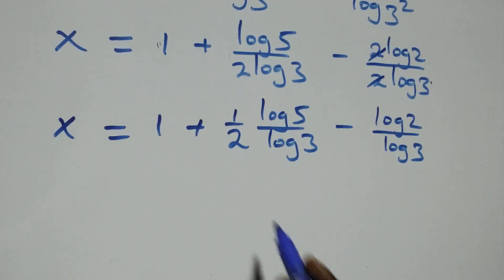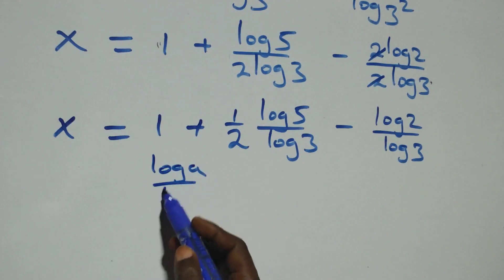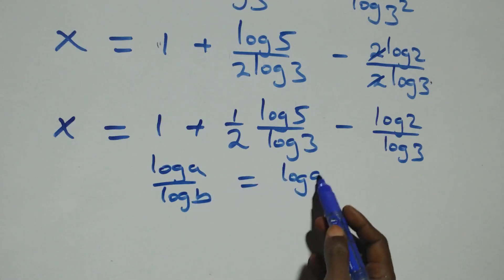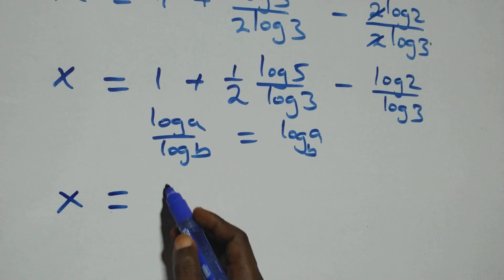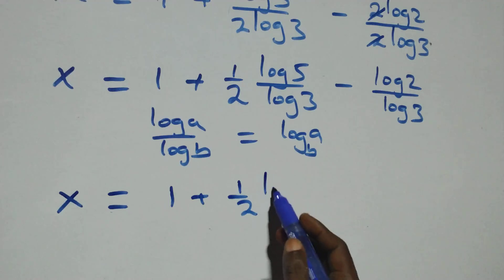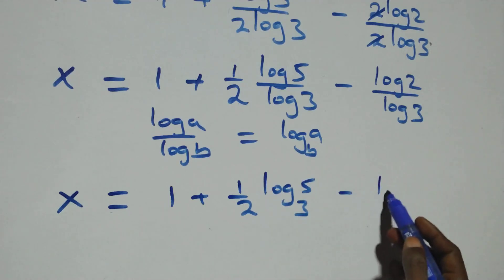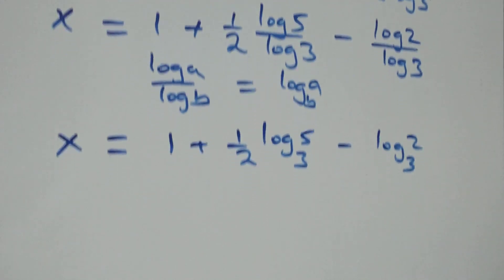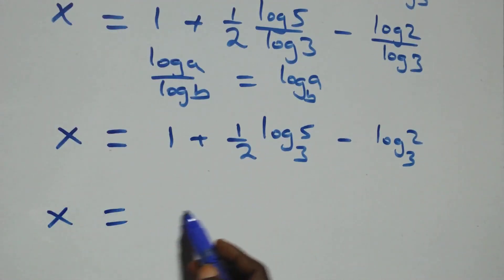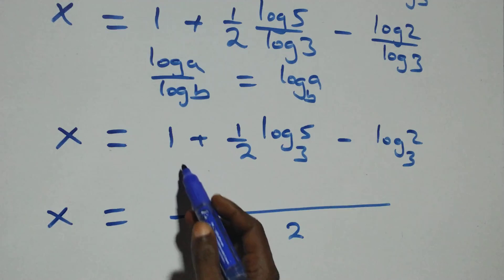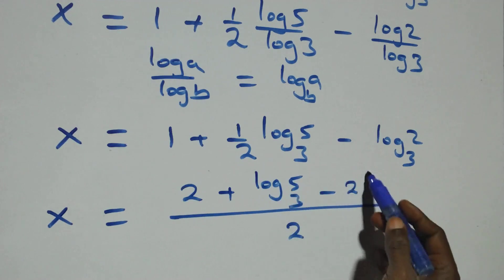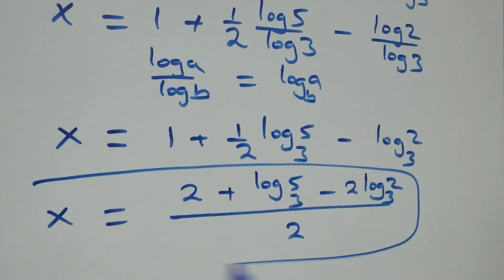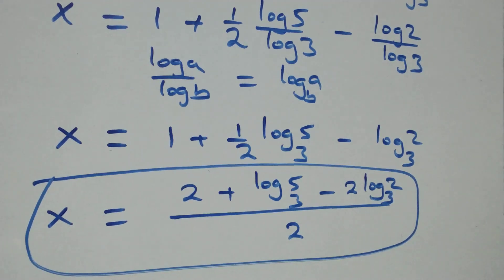Then the next step here, we apply the power law of logarithm: the 2 comes down here and here as well. We have x equals to 1 plus log 5 over 2 log 3 minus 2 log 2 over 2 log 3. This becomes x equals to 1 plus one-half times log 5 over log 3, then minus the two cancels each other and we have log 2 over log 3. We apply change of base: log a over log b is the same thing as log a to base b. All we have becomes x equals to 1 plus one-half log 5 base 3 minus log 2 base 3.